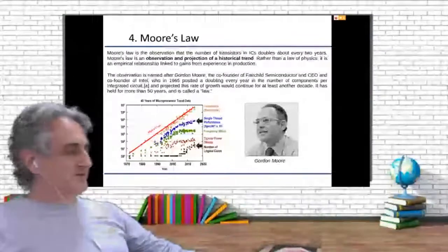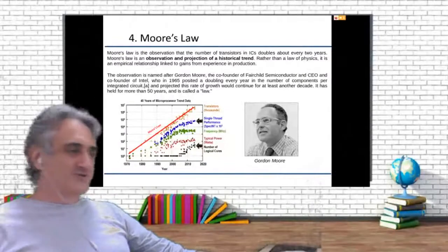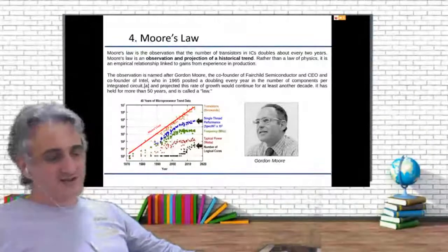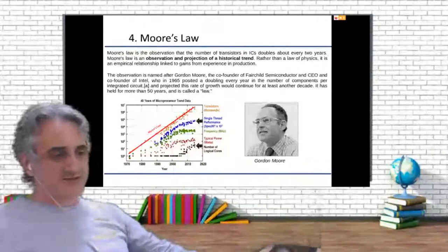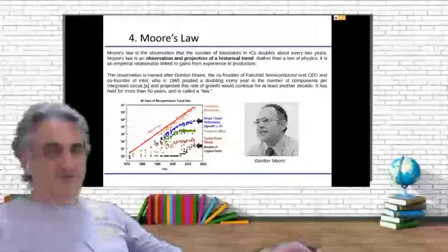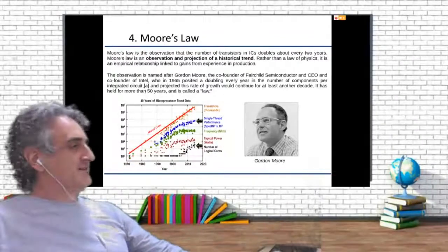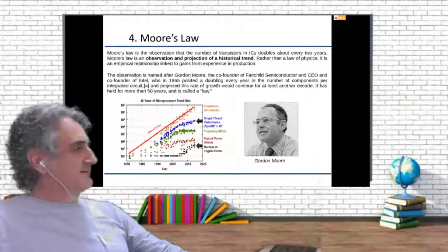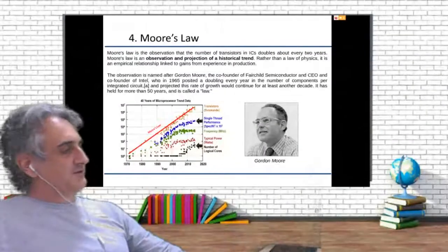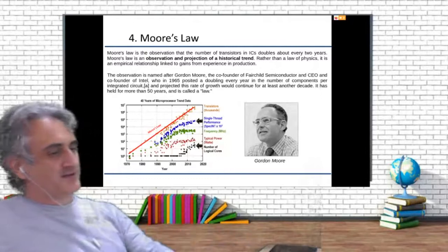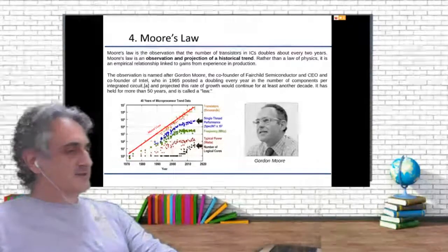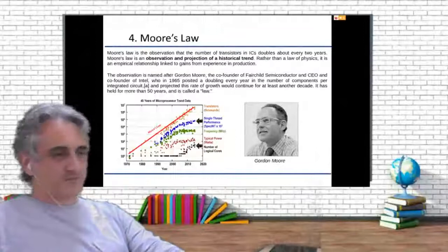I remember when the dual core was a breakthrough, and now I probably have eight cores in my single computer. Things are going up quite fast. The way to go is probably increasing the number of cores or the number of parallel circuits working together.